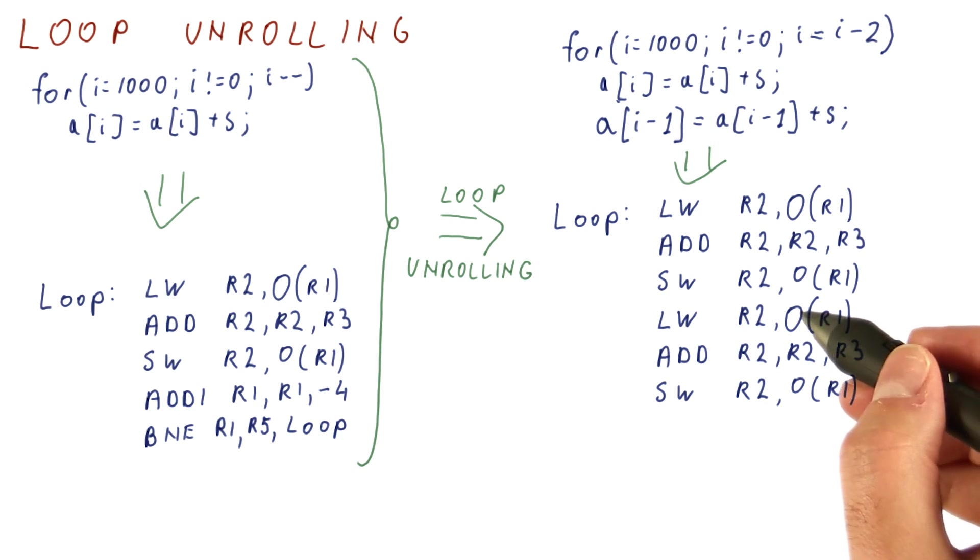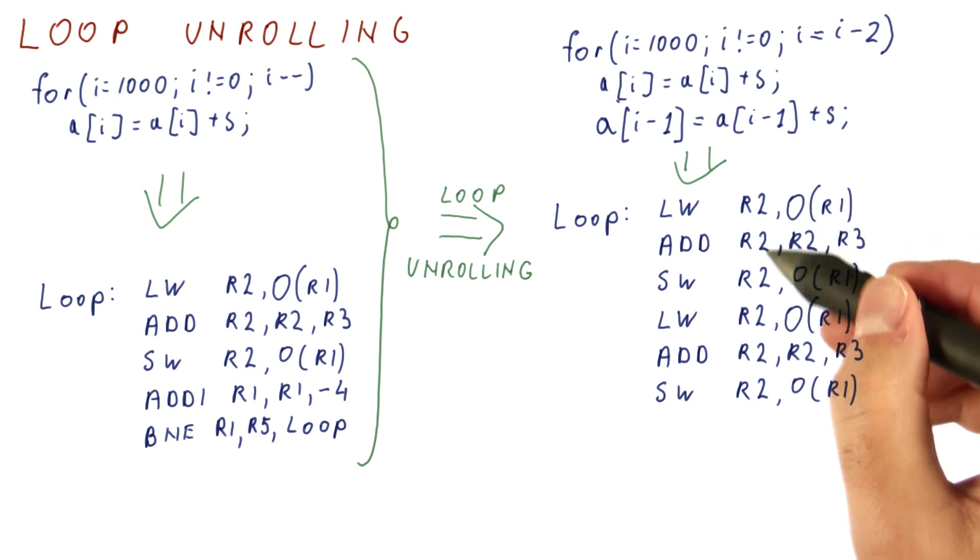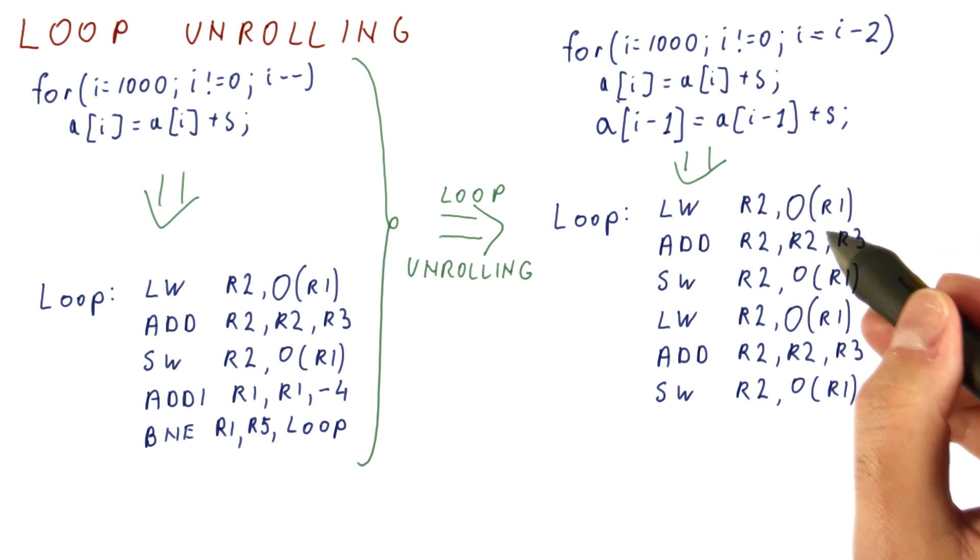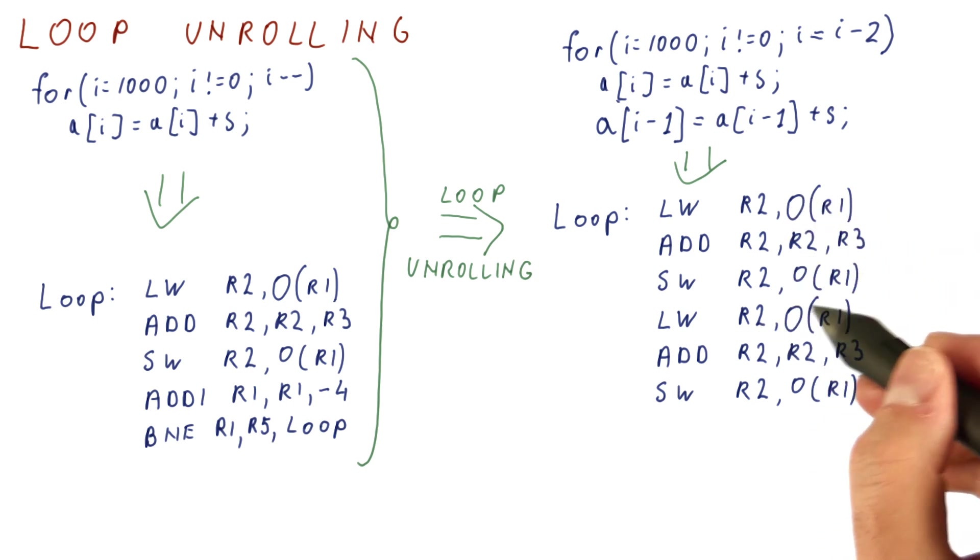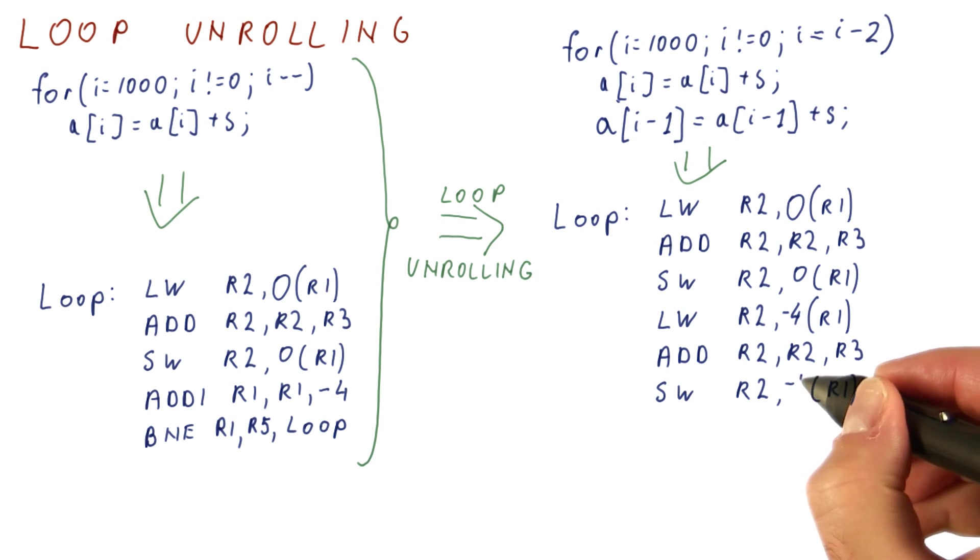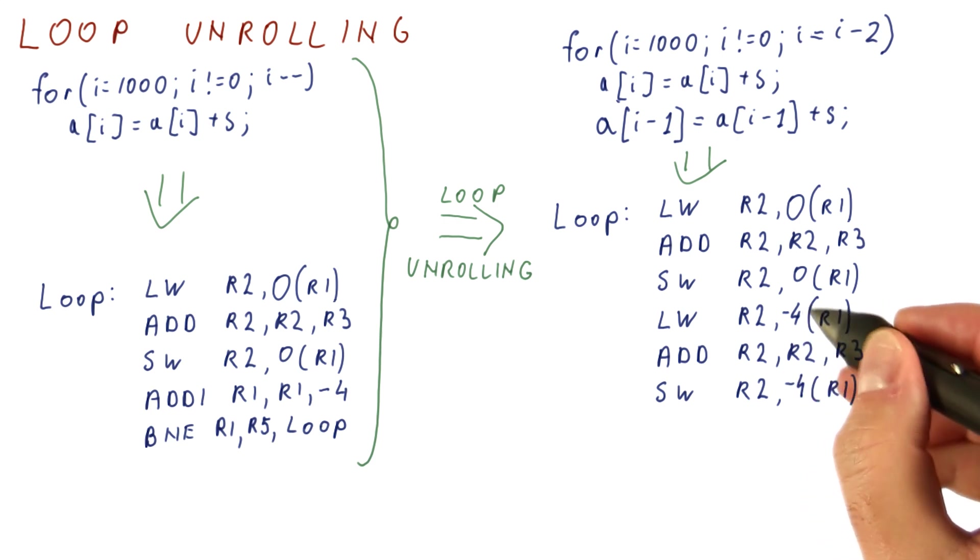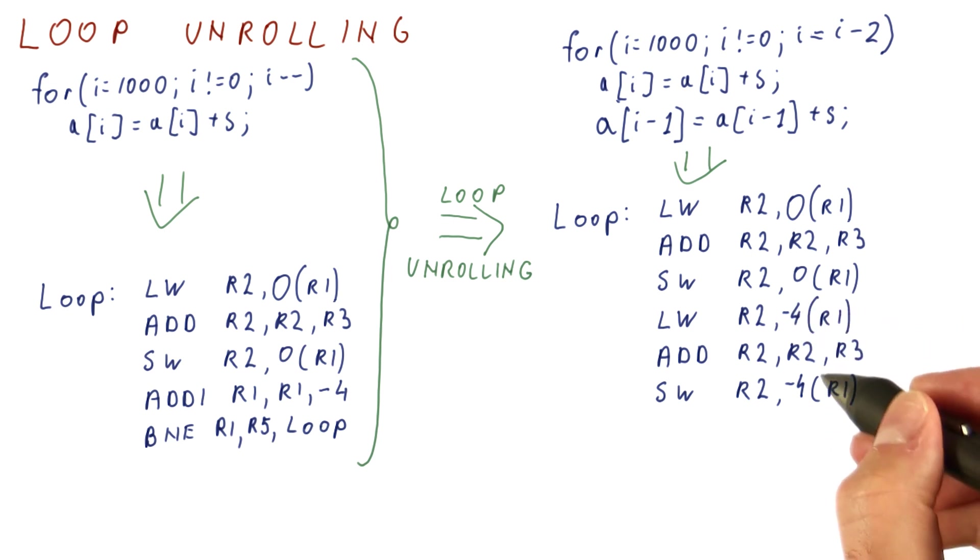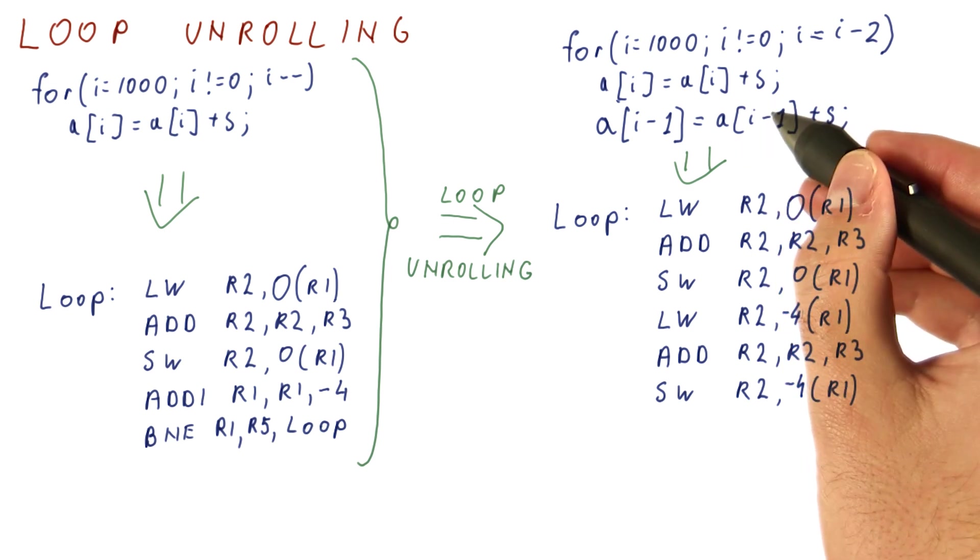However, if we just copied the instructions again, we would be doing the same work twice. We would just add r3 again to our same element a of i. So instead, we will adjust the offset here so that we are accessing the element right below the one that r1 is pointing to. This would be the a of i minus 1.